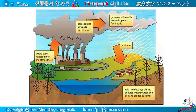Look at the process of acid rain generation. First, acidic gases are released into the atmosphere. Second, gases are carried upwards by the wind. Third, gases combine with water droplets to form acids. Fourth, acid rain falls down on earth. Fifth, acid rain destroys plants, pollutes water sources and soil, and erodes buildings.